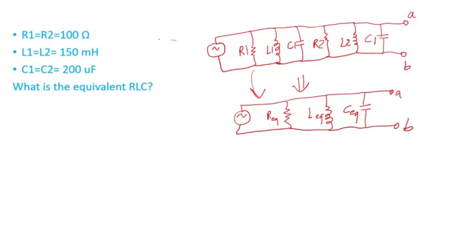So to keep things simple, R1 equals R2 equals 100 ohms, L1 equals L2 equals 150 millihenry, and C1 equals C2 equals 200 microfarads. What is the equivalent RLC?